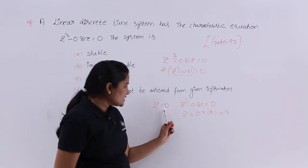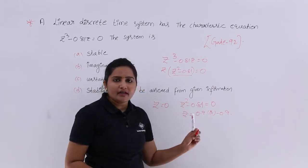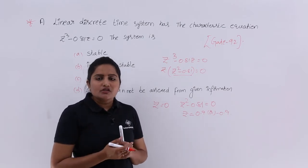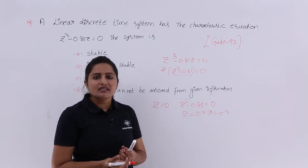If you see the poles 0 and 0.9, all the poles are inside the unit circle. So you can say the system is stable.